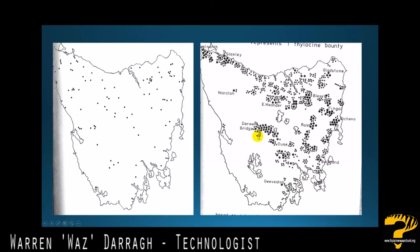Looking at that, you can see this area down here had no bounties taken. You could argue that because there were no bounties there, there's actually a remnant population — but that's another discussion. These sightings here on the coast, down here, also had no bounties ever taken, and not a lot of people were actually accessing that area, so that needs to be taken into account.